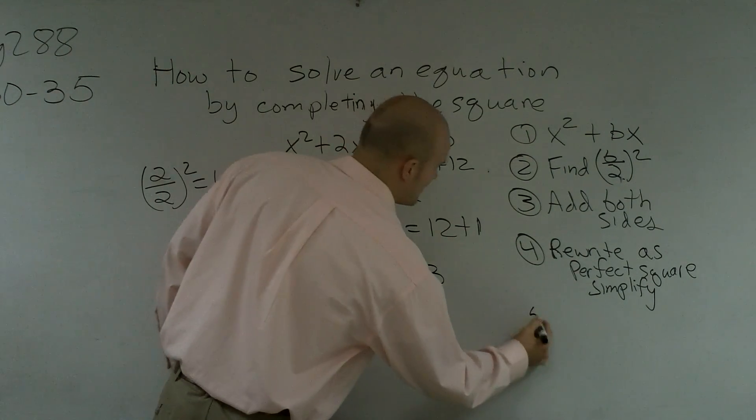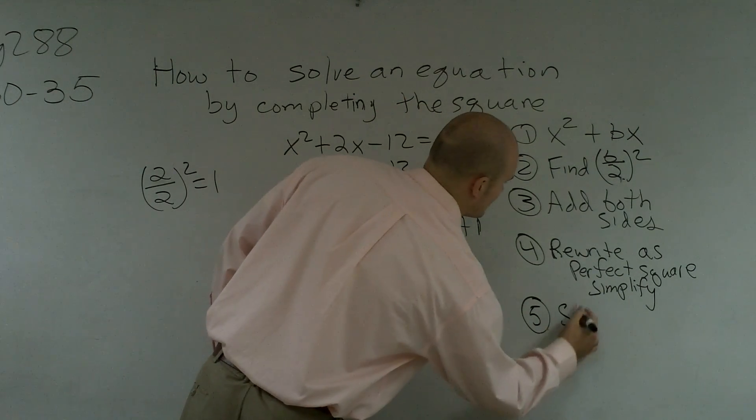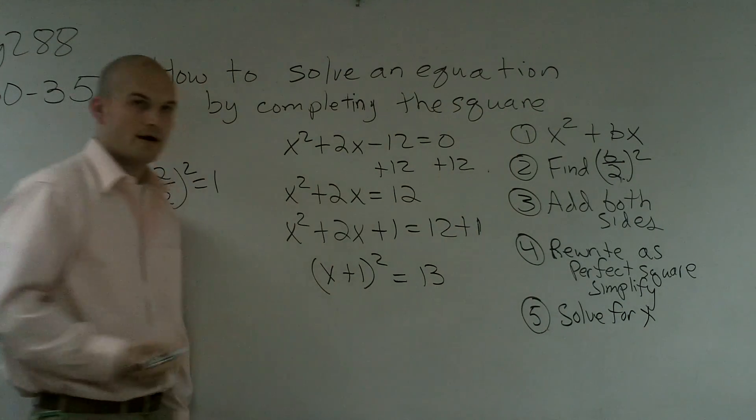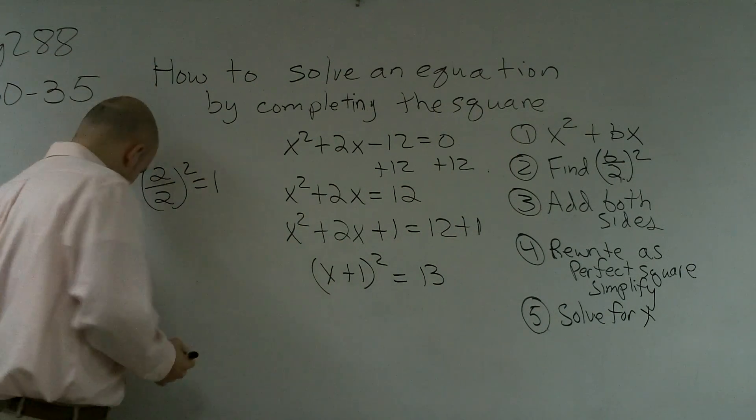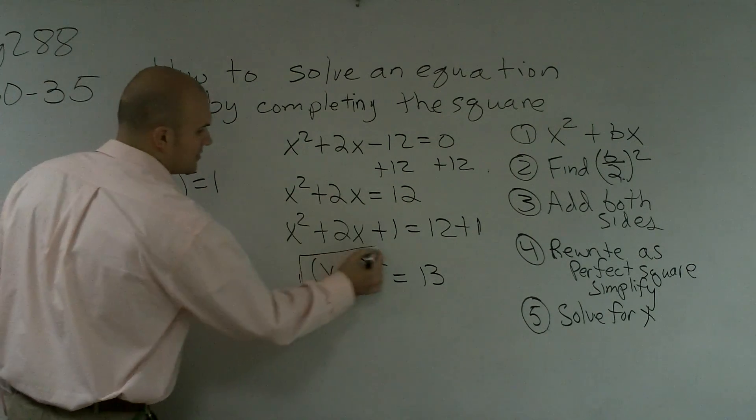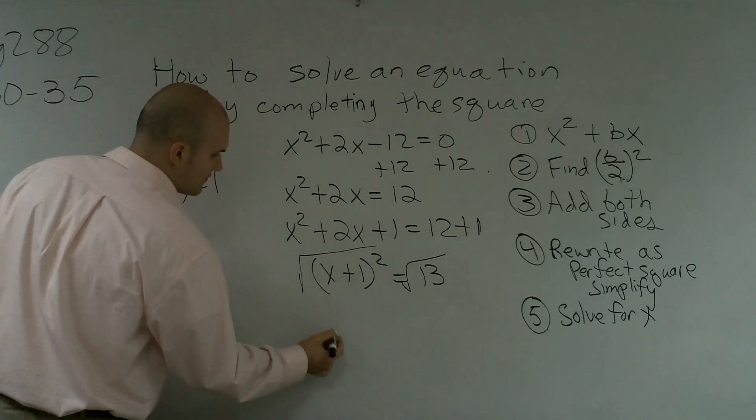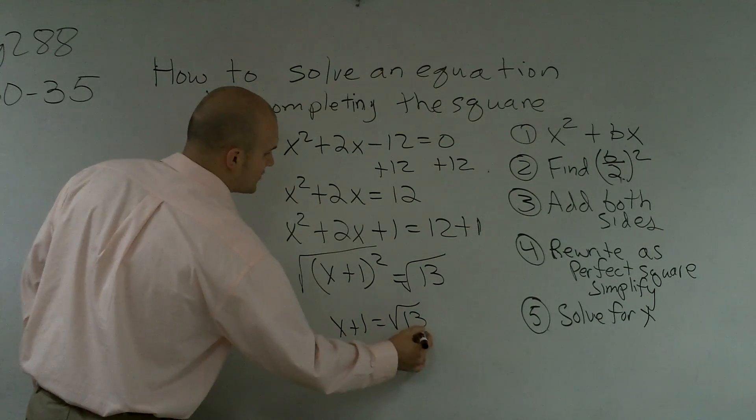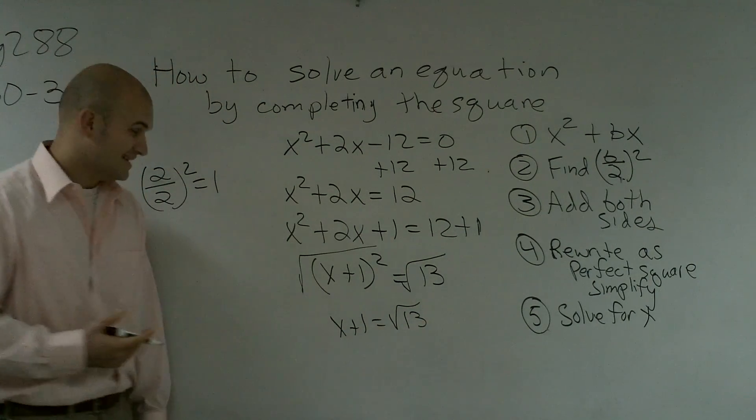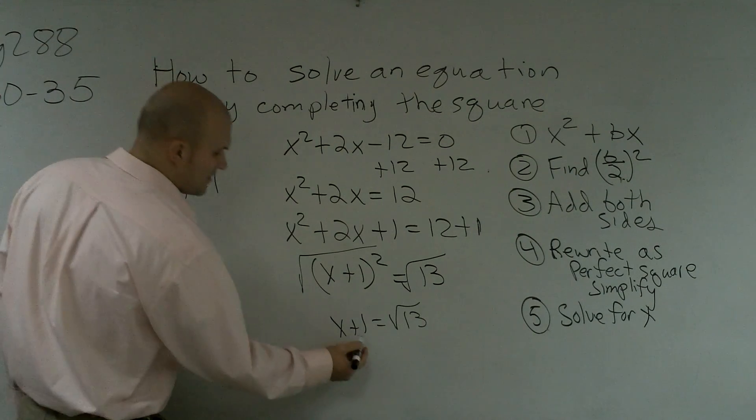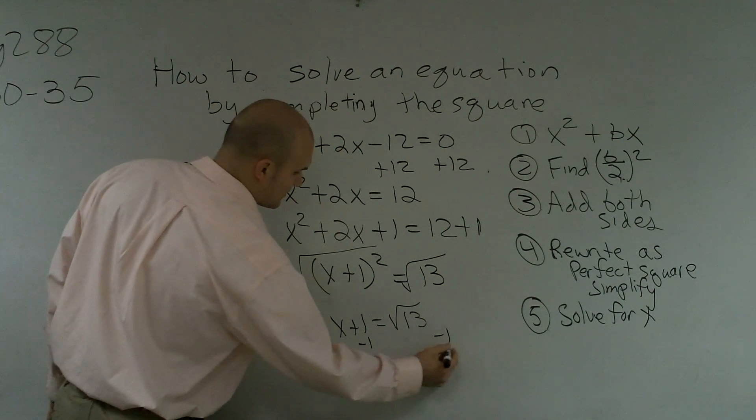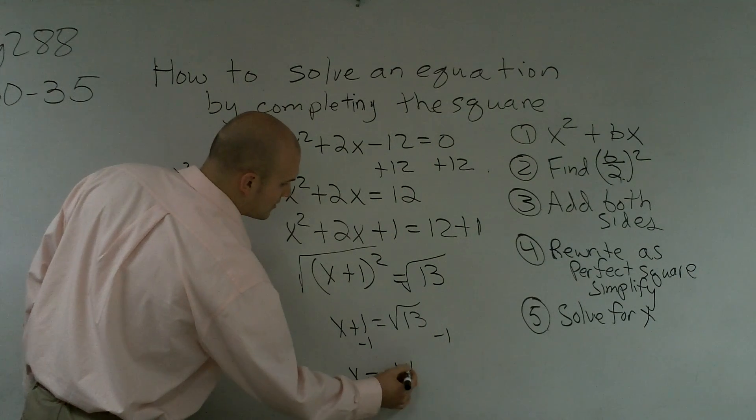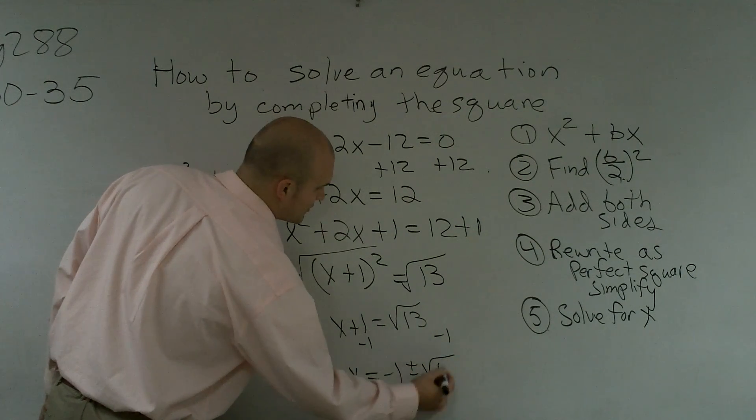Now, our fifth step is to solve for x. All right. So now, to solve for x, what do we have to do? Take the square root of both sides. Therefore, you have x plus 1 equals the square root of 13, which we cannot simplify at all, so we're just going to leave it like that. And then I'm just going to subtract 1, so I'll have x equals negative 1, plus or minus the square root of 13.